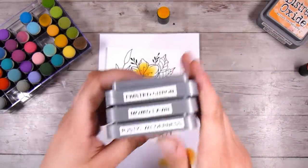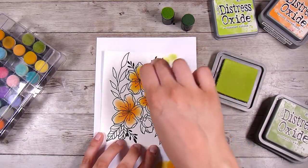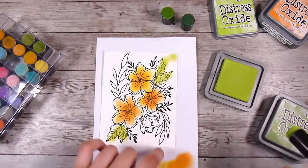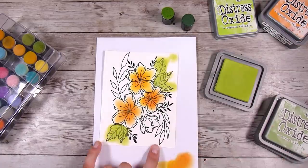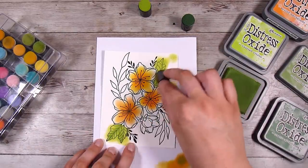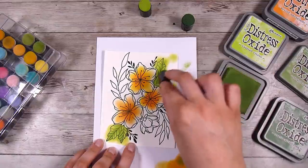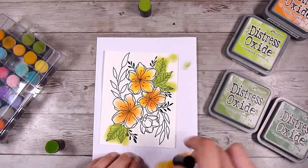Then for the greens I just picked out twisted citron, mowed lawn, and rustic wilderness. But you don't need all three of these colors. I kind of ended up putting on a little bit of the twisted citron just to give a base layer I guess, and then a little bit of the mowed lawn. But I actually ended up adding a touch of the darker one as well.